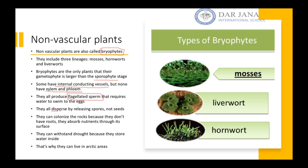Bryophytes disperse by releasing spores — they do not have seeds. They are dispersed by releasing spores into the environment. And because they don't have roots, they have the ability to colonize rocks.